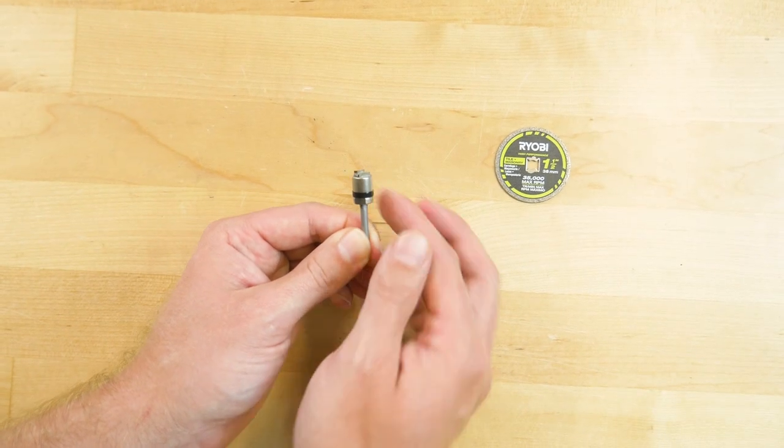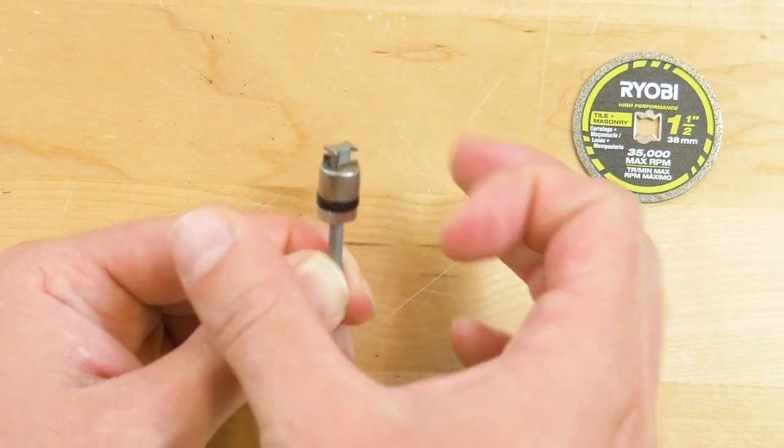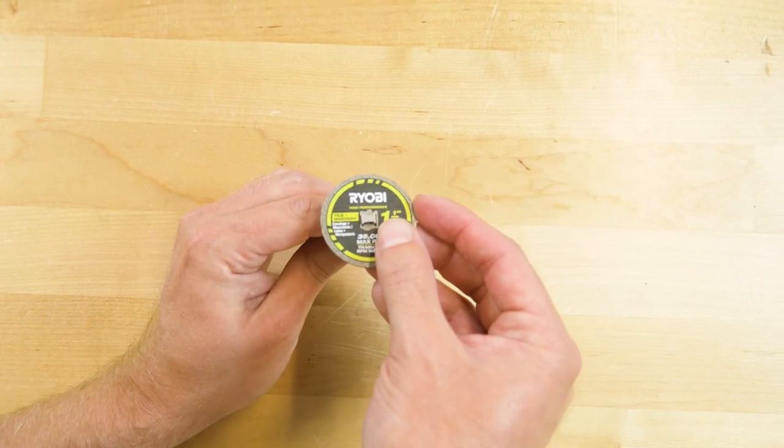First, loosen the base of the mandrel around five full rotations so that the insert is sufficiently exposed. Next, insert the mandrel into the cutoff wheel.